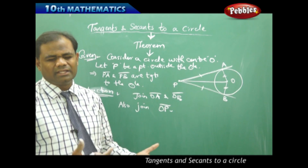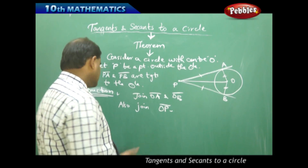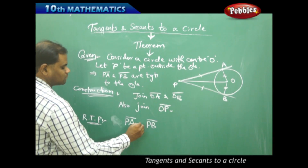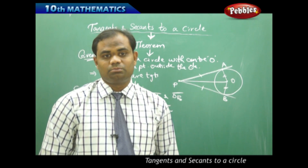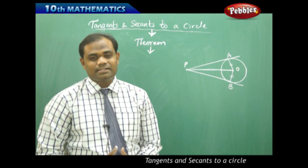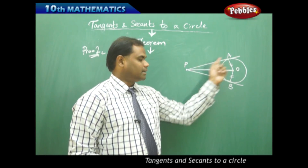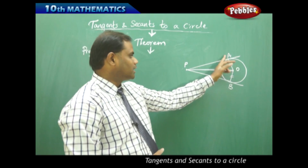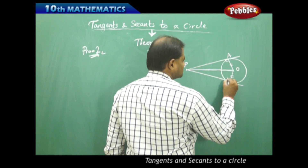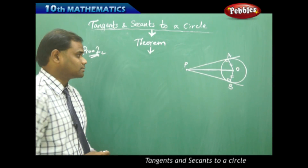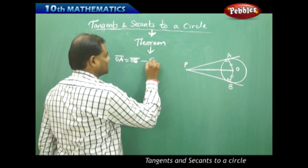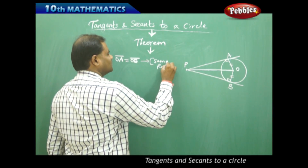So the required to prove is PA = PB, using the various geometrical properties in mathematics. Now in the proof, since OA and OB are radii they are equal, and we know that the radius is always perpendicular to the tangent. So OA is equal to OB, as they are the same radii of the circle.